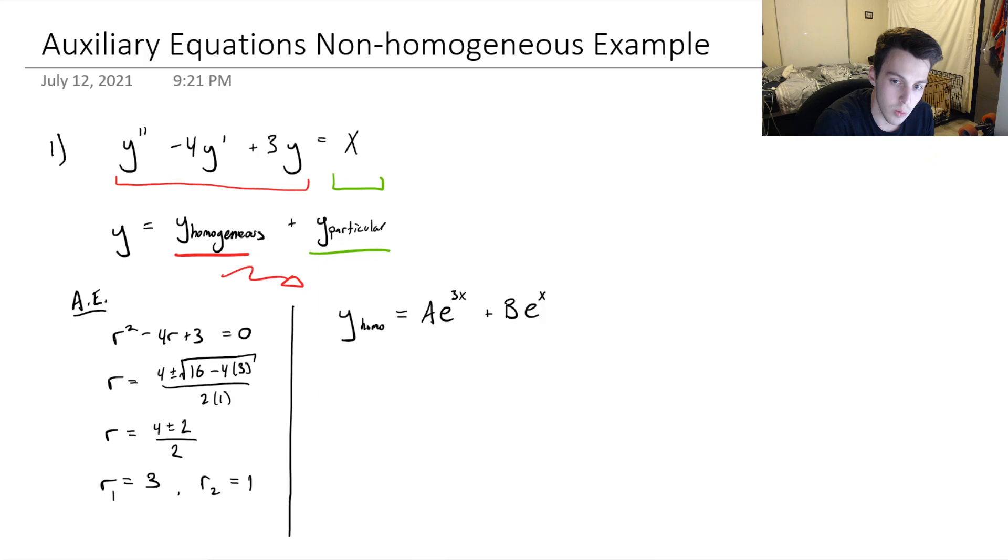And you can see that the right-hand side is a linear first-order polynomial. So let's just assume that the particular solution takes the form of a linear first-order polynomial as well. So let's say in its most general form, it would be expressed as C times x plus D. So let's assume that that's the form of the solution.